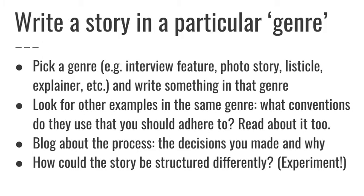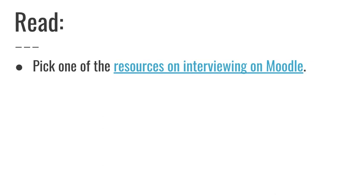To practise some of these techniques, I'd recommend writing a story in a particular genre — picking an interview feature, for example, and writing something in that genre. Before you do that, look at other examples within that genre and try to identify what conventions they use, such as the standfirst or the use of colour. Read about industry practice as well — there'll be plenty of books about that particular genre and industry press with interviews with people who create material in that genre. As well as writing in that genre, blog about the process: what editorial decisions did you make and why? What reading or examples gave you ideas? You can even consider how the story could be structured differently or experiment with different editorial decisions. You can find readings on interviewing on Moodle — there's a folder with a number of different resources, so pick at least one, have a read through it, and use it to influence what you do.